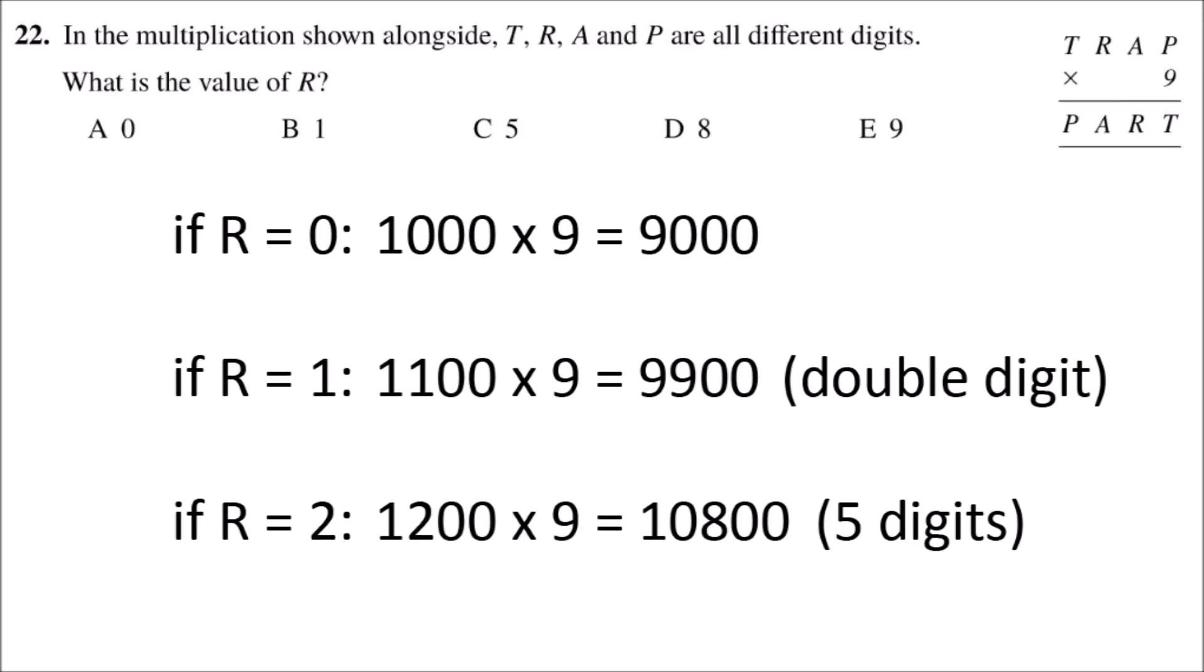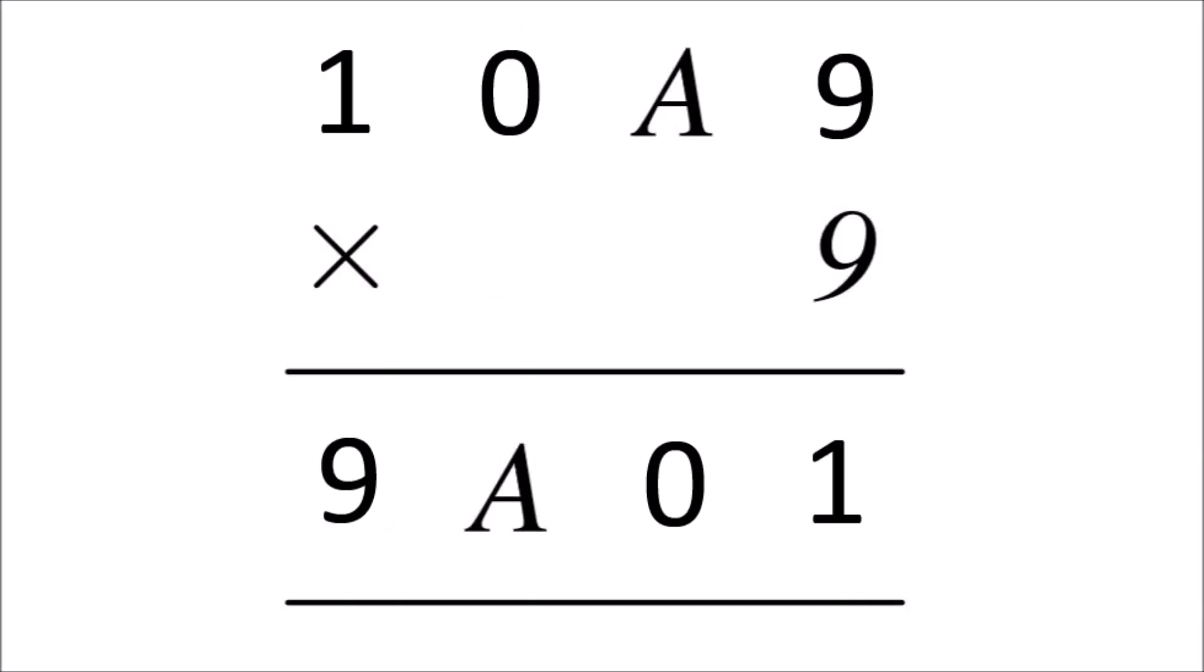Because that would increase the value of P. Therefore, R can also not be more than one. However, T is already one and the digits are different, so that means that R must be zero.